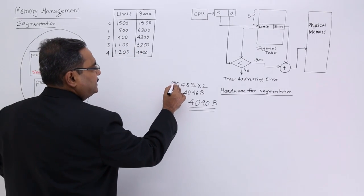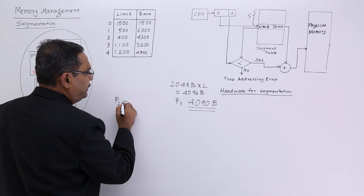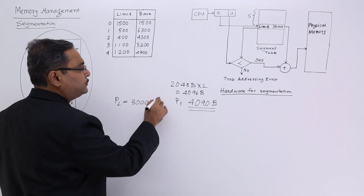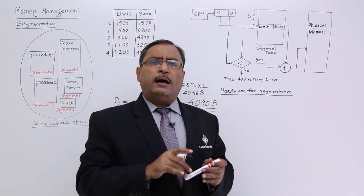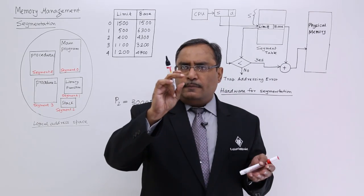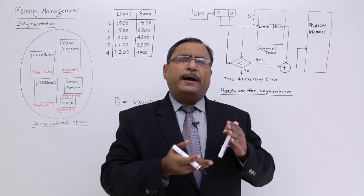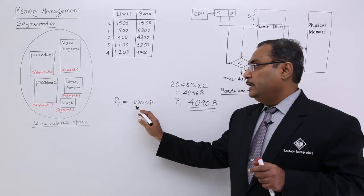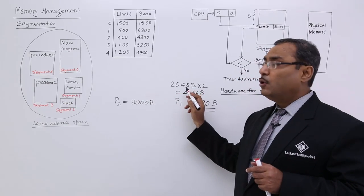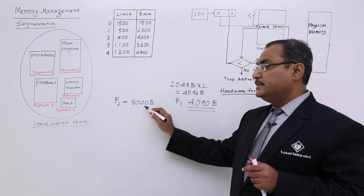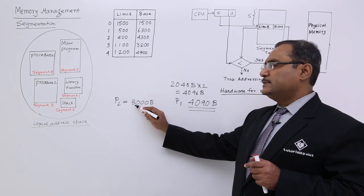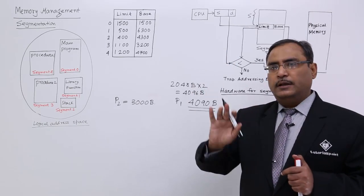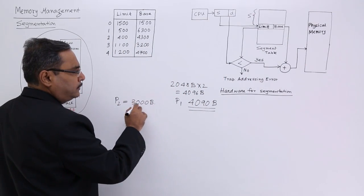Consider another process P2 having a size of 3000 bytes. Then 2048 bytes will be in page 1. In page 2, there will be free space, but we have no option because we must allocate frame-size wise. So 952 bytes will be loaded in the second page, leaving 1096 bytes of free space in the second page. But in the page map table, it will be written that two frames have been allocated. That is the main disadvantage in case of paging.